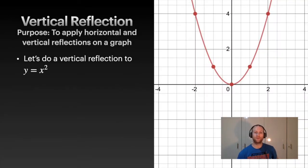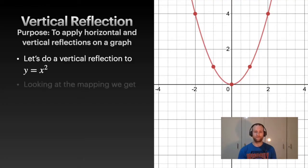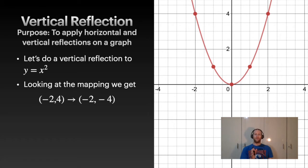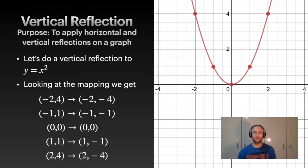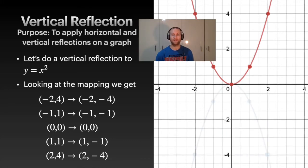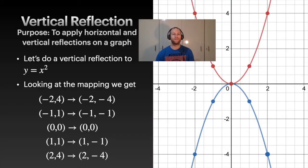Let's do a vertical reflection on y = x². If we look at mapping, we go from (−2, 4). If we reflect that, we just take the y value and put a negative, so we get (−2, −4). For (−1, 1), take the y value, flip it, make it negative. Do that for each point. (0, 0) doesn't reflect. (1, 1) gives you (1, −1). Notice the y values just change from positive to negative. If we plot this out and connect the dots, we get the nice blue line. This is a reflection across that x-axis.